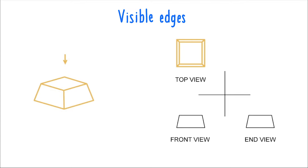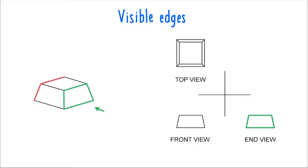Notice how the very top face of the object is slightly smaller than the bottom, so the sides of the object slant in, and you can slightly see those side faces in the top view. Also notice that edges on the left, marked in red, are not going to be depicted in the end view because they line up perfectly with the visible edges marked in green.